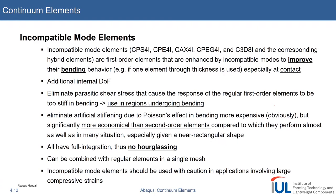Last but not least on the list is the family of incompatible mode elements. They can also be combined with hybrid elements. They are all first-order elements but are extended by an additional degree of freedom to improve especially the bending behavior — and more so if the bending also includes contact. This element type allows you to reduce the number of elements used through the thickness while still getting quite accurate results. It's a go-to element type because it combines the best of two worlds.